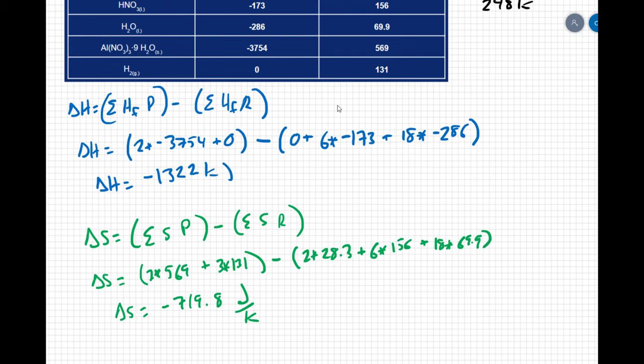But now we've got to make sure we are consistent with our units. I have kilojoules in my delta H value and I have joules in my delta S value. So I'm going to convert my delta S value to kilojoules. So negative 0.7198 kilojoules per kelvin.